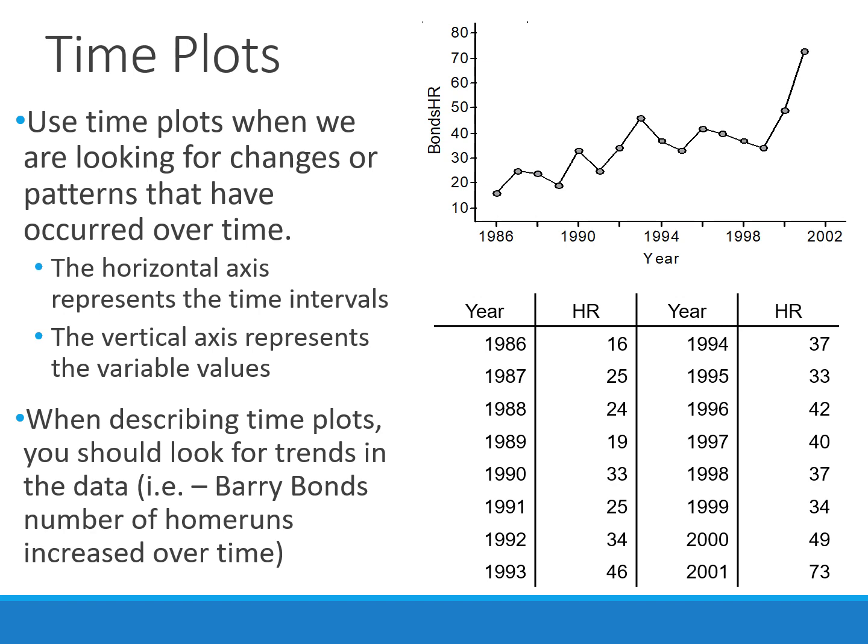Another type of graph is a time plot, where the x-axis is specifically allocated to time. Here we have a time plot for the number of home runs hit by Barry Bonds. In a graph like this, we're looking for trends. We can see that over time, Barry Bonds was hitting more home runs — we later found out this is because as he got later into his career, he was using steroids.